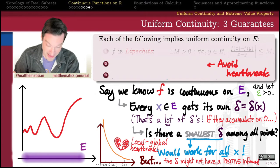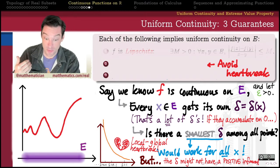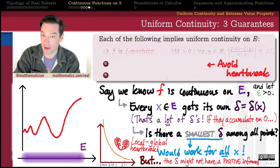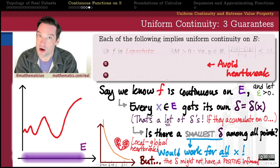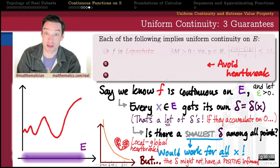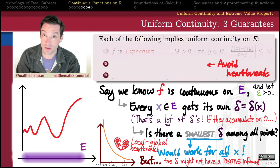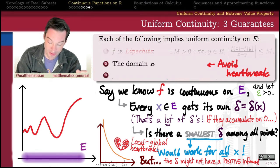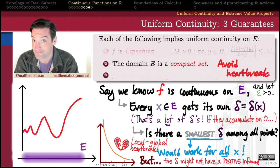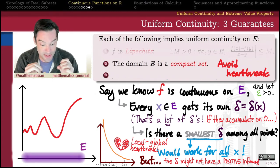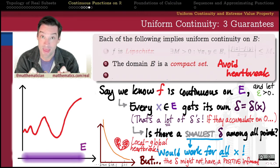And so what we want is we want a way to avoid the local to global heartbreak. And the way, as you'll remember from our earlier videos, that we can always know that we are able to avoid this heartbreak that comes from trying to glue together infinitely many truths into a uniform single truth. The way to do that is to predicate those truths on a compact set.